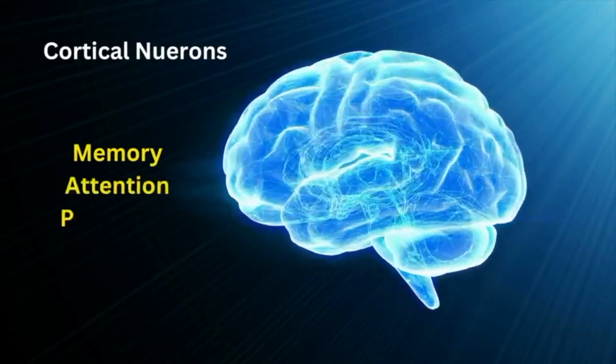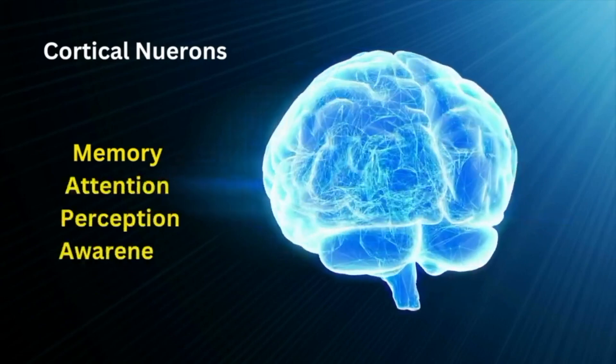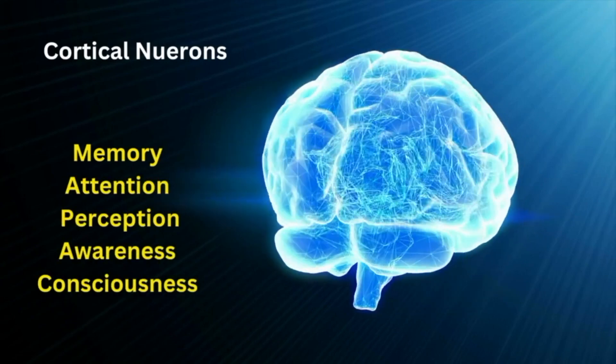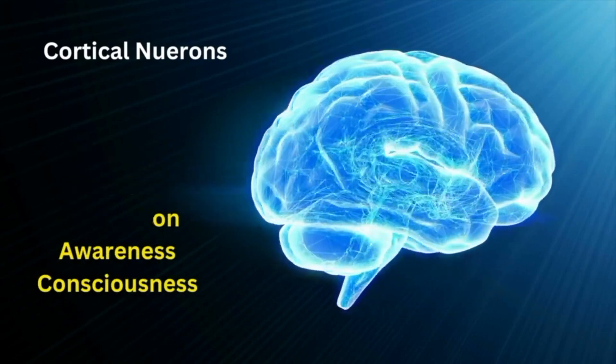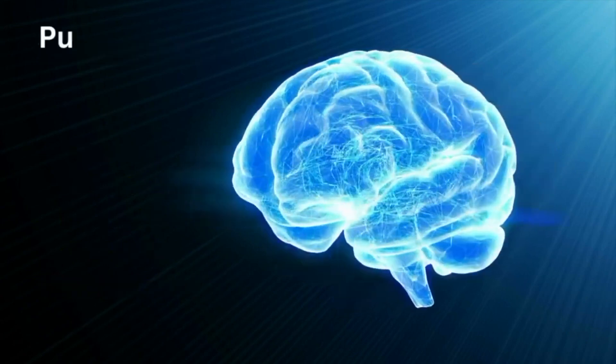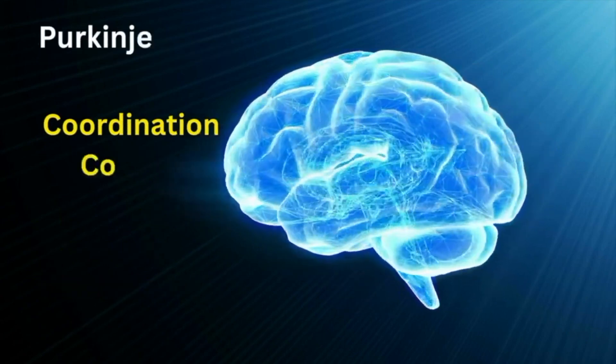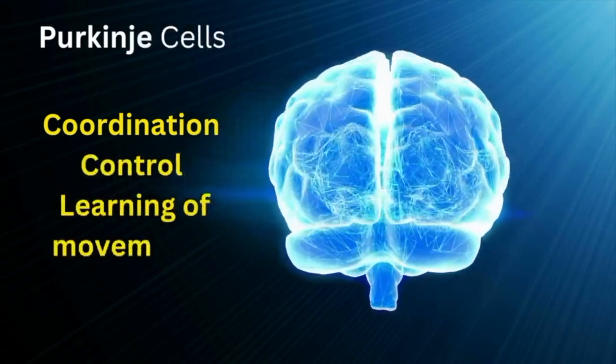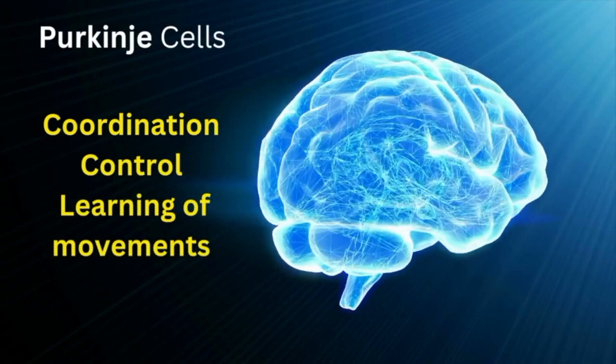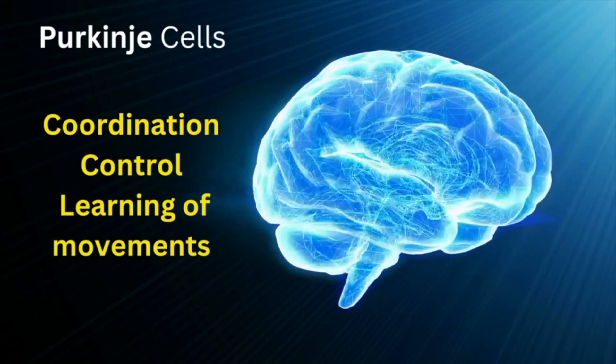The roughly 10 to 14 billion neurons in the cerebral cortex are known to play a vital role in memory, attention, perception, awareness, and consciousness. Purkinje cells are the sole output neurons of the cerebellar cortex and play pivotal roles in the coordination, control, and learning of movements.